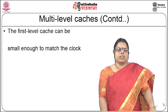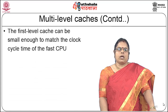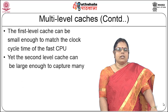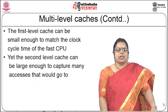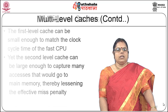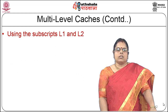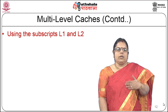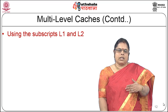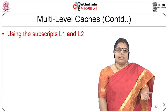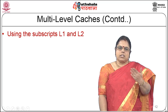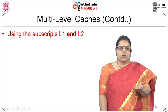The first level cache can be small enough to match the clock cycle time of the fast CPU, and the second level cache can be large enough to capture many accesses that would otherwise go to main memory, thereby lessening the effective miss penalty. Even though the L2 cache is not as fast as L1, its access times are much less than main memory access times. So a multi-level cache definitely gives an improvement in performance.